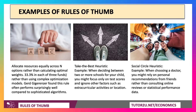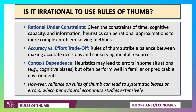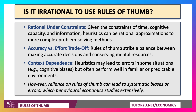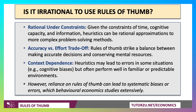This is what's called rule-of-thumb behaviour. Is it necessarily irrational to use rules of thumb? The answer is no, because you live in a world of constraints and complexity. Given the constraints of time, cognitive capacity, and information, heuristics can be — and this is a good phrase to use in the exam — rational approximations to more complex problem-solving methods. There is a trade-off between making an accurate decision and conserving your brain power, and heuristics may lead to errors in some situations, but often perform well in familiar or predictable environments.